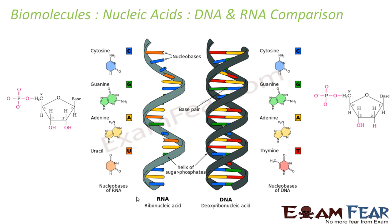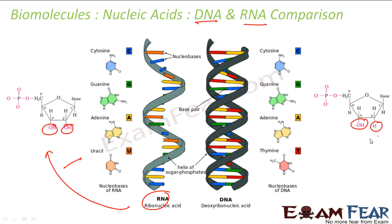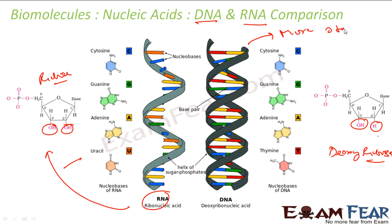Comparing DNA and RNA: DNA has deoxyribose sugar (one OH), RNA has ribose sugar (two OH). DNA is double-stranded; RNA is single-stranded. DNA is more stable — due to double-stranding and fewer OH groups — while RNA is less stable. In DNA we have AT bonding (adenine pairs with thymine), but in RNA we have AU bonding (adenine pairs with uracil).